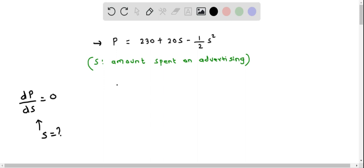I am going to find the derivative of P, which I write as dP by dS. This equals the derivative of the right side expression. The derivative of 230 is 0, plus the derivative of 20S is 20 times 1, minus half times the derivative of S squared, which by the power rule is 2S.